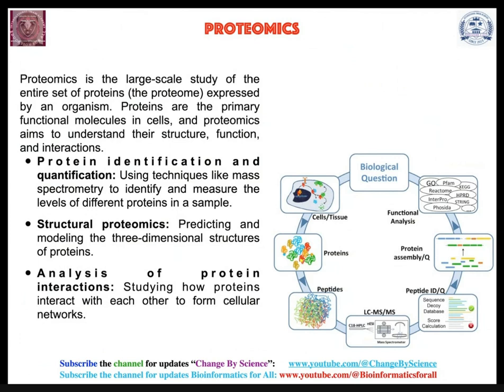Protein identification and quantification uses techniques like mass spectrometry to identify and measure the level of different proteins in a sample — a process that is time-consuming but commonly used. Structural proteomics involves predicting and modeling the three-dimensional structures of proteins, and protein interaction analysis studies how proteins interact with each other to form cellular networks.